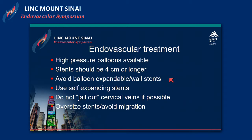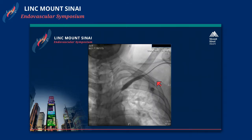In terms of endovascular treatment, high-pressure balloons need to be available. The stents should be about four centimeters or longer. Avoiding balloon-expandable stents is a good idea. It is extremely important, if possible, not to jail out the cervical veins for future access. Stents need to be oversized 10 to 20 percent to avoid migration.